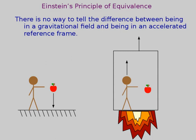Einstein's principle of equivalence is what general relativity is based on. When you do modern physics, you'll learn that special relativity is entirely based on two fundamental assumptions: one, the laws of physics apply in any inertial frame; and two, the speed of light is one of those laws of physics.